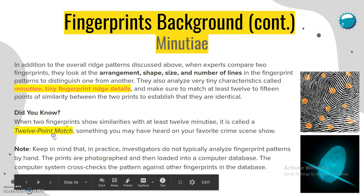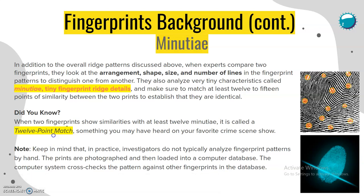In addition to the overall ridge patterns, when experts compare two fingerprints they look at the arrangement, shape, size, and number of lines in the fingerprint patterns to distinguish one from another. They also analyze very tiny characteristics called minutiae, which are tiny fingerprint ridge details, and make sure to match at least 12 to 15 points of similarity between two prints to establish that they are identical. When two fingerprints show similarities with at least 12 minutiae, it is called a 12-point match — something you may have heard on your favorite crime scene show.